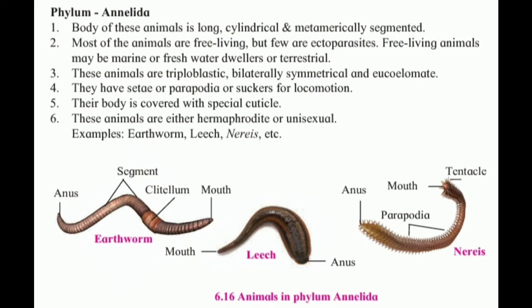Phylum Annelida: the body of these animals is long, cylindrical, and metamerically segmented, hence they are known as segmented worms. Most of the animals are free-living but few are ectoparasites. Free-living animals may be marine, freshwater dwellers, or terrestrial. These animals are triploblastic, bilaterally symmetrical, and eucoelomate.